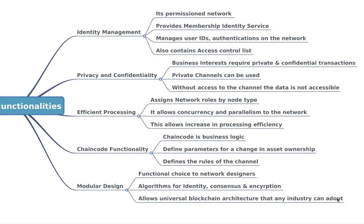For efficient processing, every node in the network is assigned specific roles, providing concurrency and parallelism to the network. Transaction execution is separated from transaction ordering and commitment. This parallel processing unburdons the ordering nodes from the demands of transaction execution and ledger maintenance, allowing increased processing efficiency.